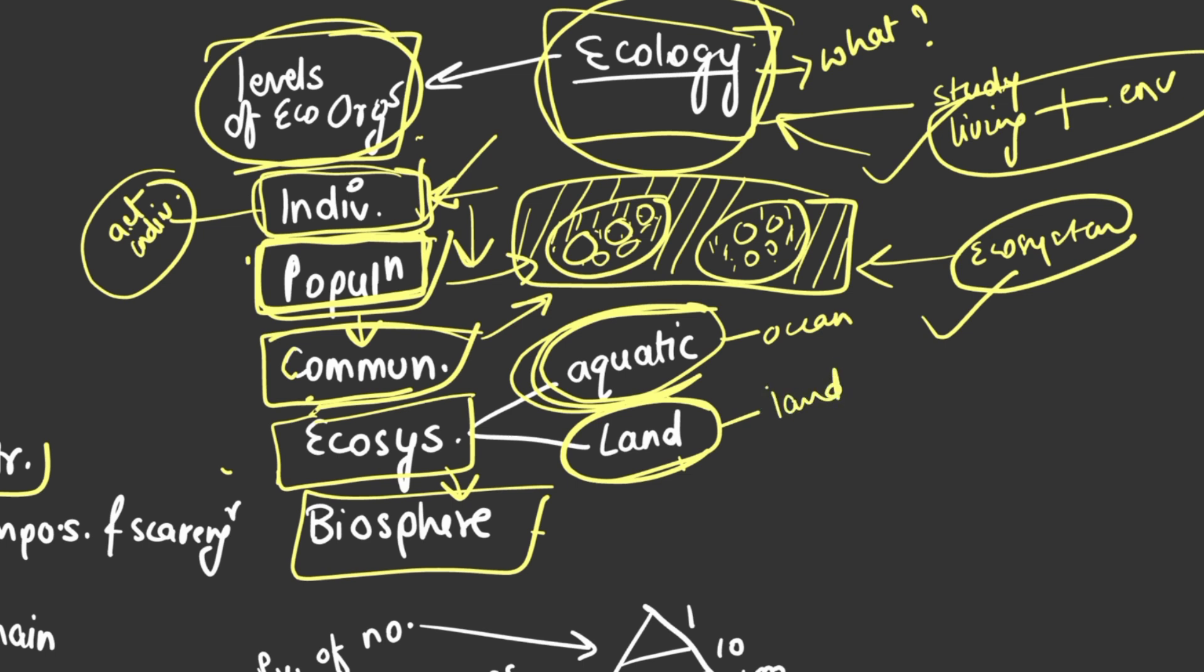And the other area which is land, so some communities live in land ecosystem. Now biosphere is nothing but a part of earth where life exists. Like we talked about aquatic and land - where land is, there is lithosphere.